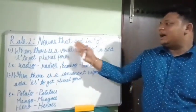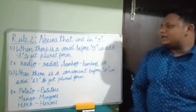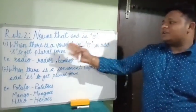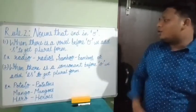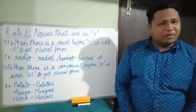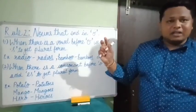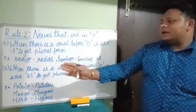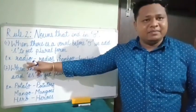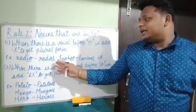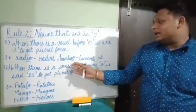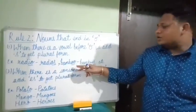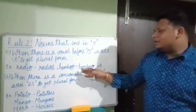Rule number two is for nouns that end with the letter O. There are two conditions. The first condition: when there is a vowel before O, we add S to get the plural form. For example, radio — we have I, a vowel, before O, so we add S: radios. Bamboo — we have O as a vowel before the last letter O, so we add S: bamboos.